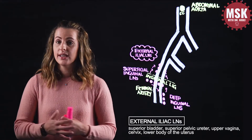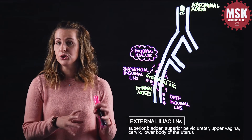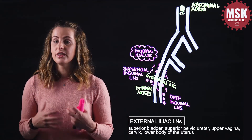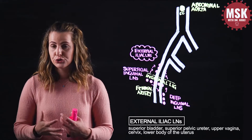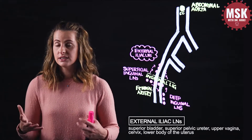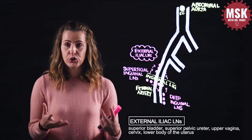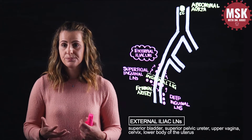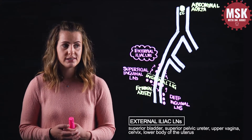The external iliac nodes will receive afferent drainage from both superficial and deep inguinal lymph node groups. They will also receive lymphatic drainage directly from the anterosuperior pelvic structures, including the fundus or superior aspect of the bladder, the superior pelvic ureter, the superior vagina, the cervix, and the lower body of the uterus.